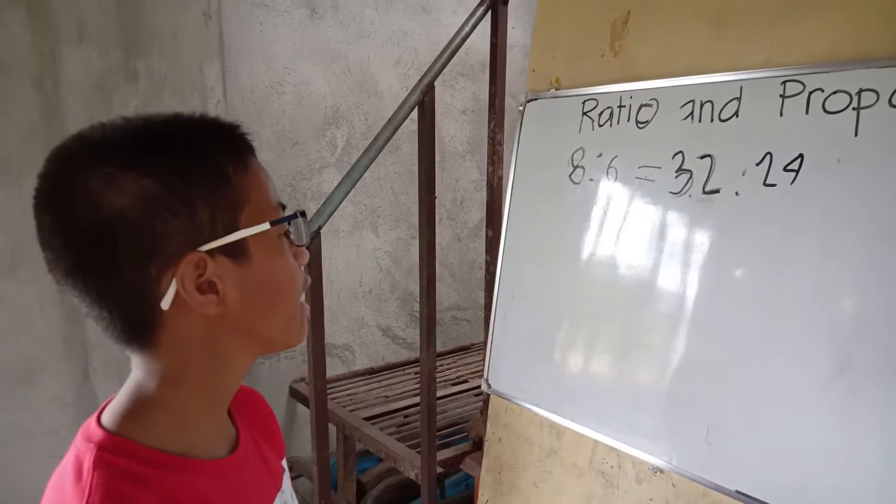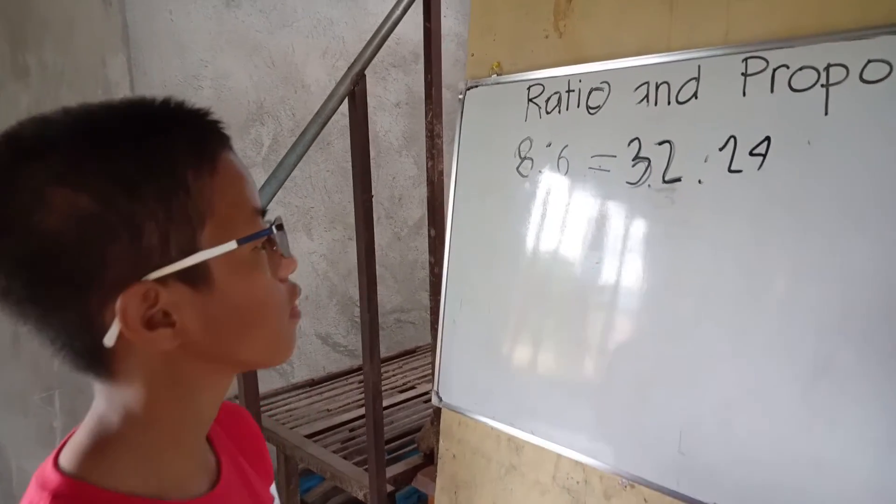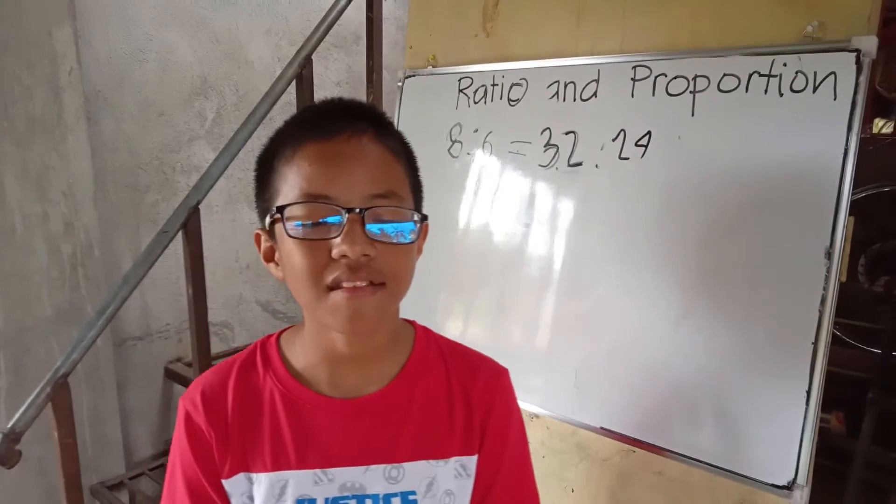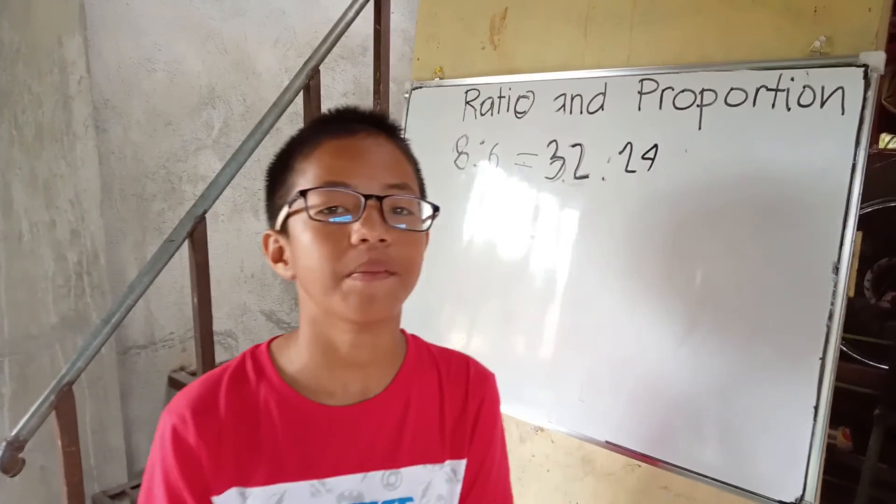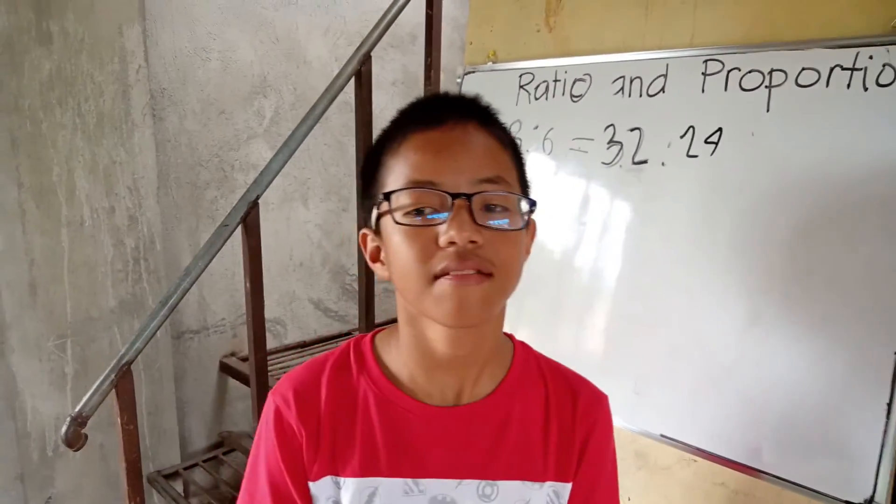So the ratios 8 is to 6 is equal to 32 is to 24. That is ratio and proportions. I hope you learned something from me. Goodbye, thank you, see you next time.